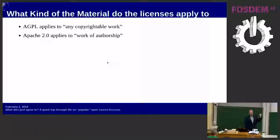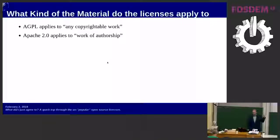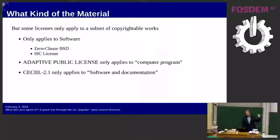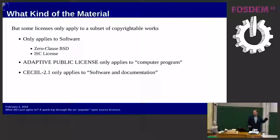The first thing I wanted to point out is what kind of material do these licenses apply to? Two really popular licenses — the AGPL and the Apache 2.0 — aren't surprising. AGPL applies to any copyrightable work, and Apache 2.0 applies to anything that's a work of authorship. Under US law those terms are basically synonymous. But other licenses out there aren't that broad — some only apply to software and leave software undefined. So if you're using the Zero Clause BSD license, you can't license anything that's not software.